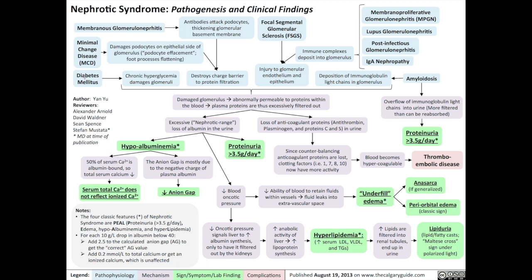Third, diabetes mellitus. Chronic hyperglycemia can damage glomeruli through complicated mechanisms beyond the scope of this slide — you can check out the video on diabetic nephropathy for more. Fourth, focal segmental glomerular sclerosis, FSGS, which directly injures the glomerular epithelium and endothelium.